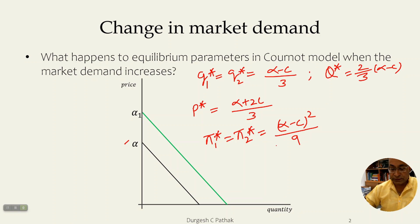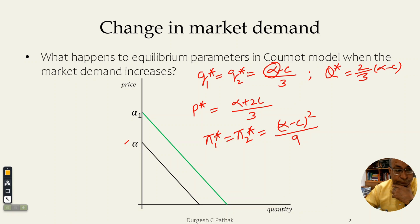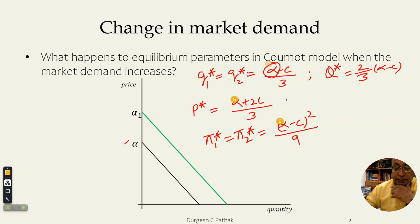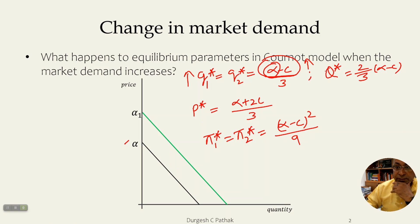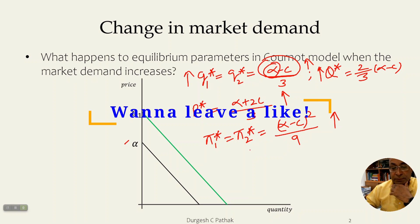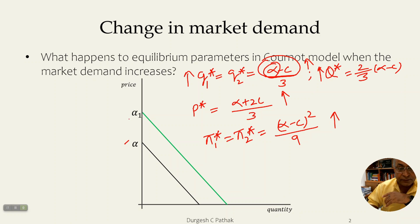Now we know these equilibrium expressions, so let us see what is happening. The parameter alpha is entering the numerator everywhere — in Q1*, in Q2*, in Q*, in P*, and in the profit expressions — and everywhere it enters in a positive sense. So with any increase in alpha, the numerators all increase, meaning quantity produced by individual firms increases, total quantity increases, price increases, and so should the profits.